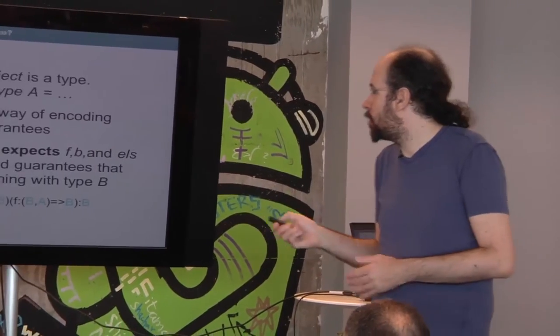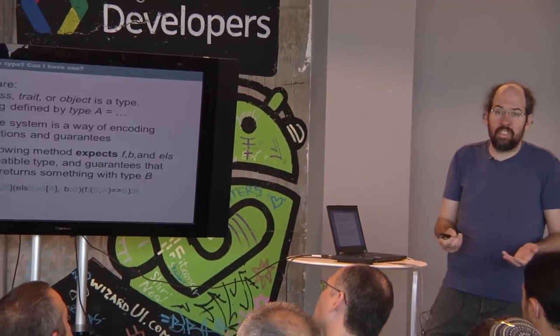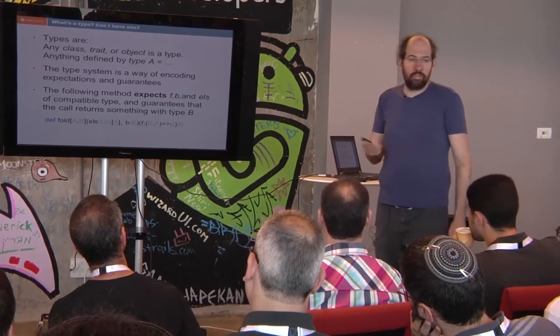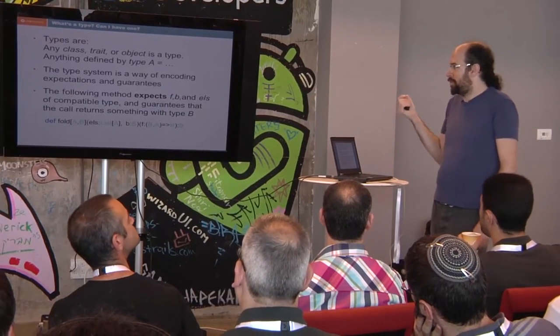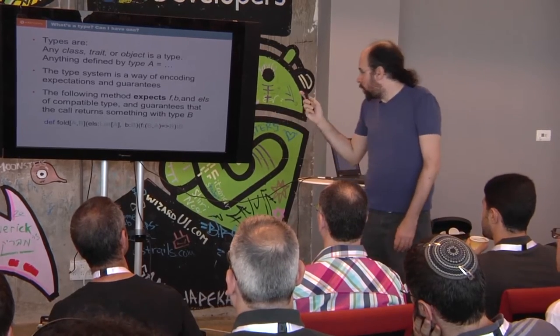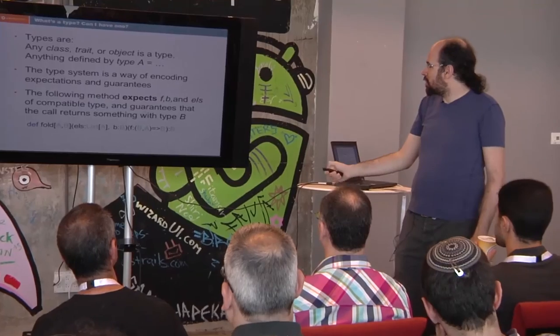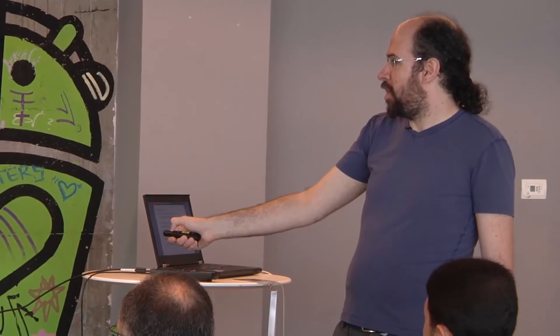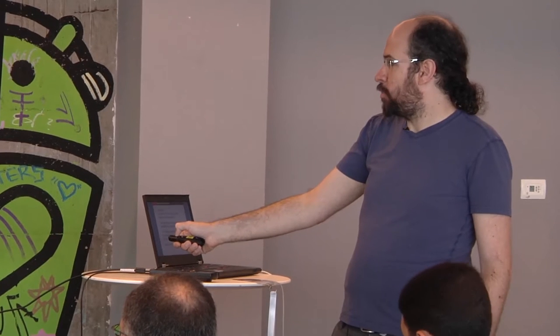Types in Scala are basically any class, trait, or object — they define a type, and anything preceded by 'type something' is a type. The way I look at it — not formally, but the most useful way to think about it — is as a set of expectations and guarantees. When I look at a method, I can see that it expects to get both a list of type A and type B, and a function which works on both these types and returns a B. Just by looking at the type signature, I can know how to implement what I want without even thinking further about the details.